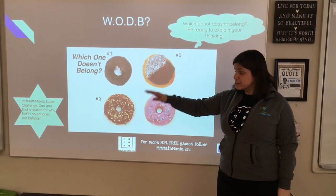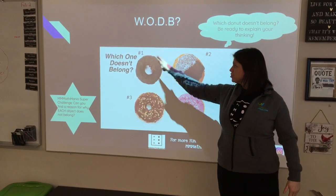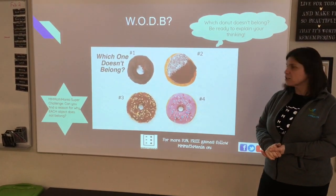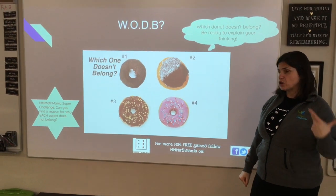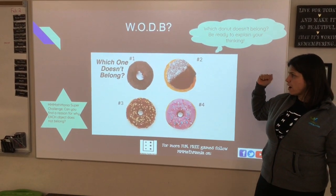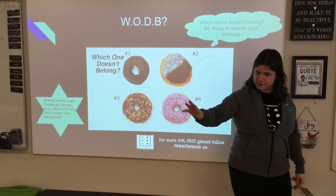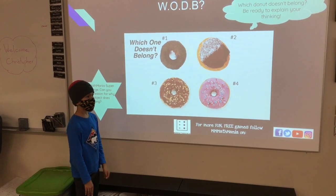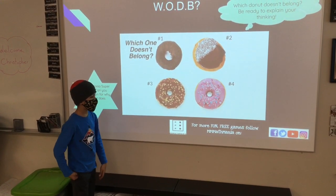As you can see, there's a big image and we always kind of number them — first object, second, third, fourth — and we just ask the question: which one doesn't belong, or which donut does not belong? All right, so here are the photos.